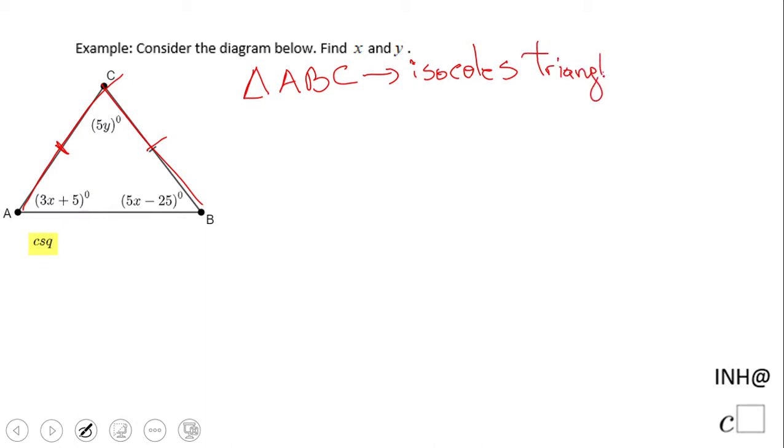That is an isosceles triangle. What is the property of an isosceles triangle? It has two congruent sides. In geometry, an isosceles triangle has two congruent sides.